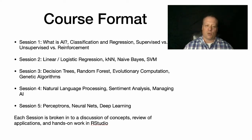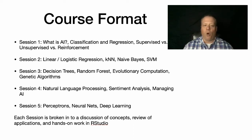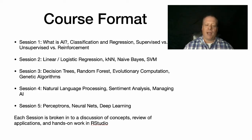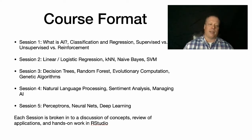Session two gets into actual methods like linear and logistic regression, k-nearest neighbors, naive Bayes, and support vector machines. Session three covers decision trees, random forest, evolutionary computation, and genetic algorithms. Session four talks about natural language processing, sentiment analysis, and managing AI — it's a more applied session. Then session five covers perceptions, neural nets, and deep learning, because I want to leave you with the catchy concepts that a lot of people are using now in the AI space.